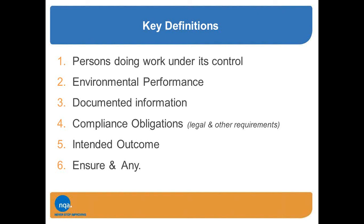Environmental performance refers to the environmental results achieved when aspects, activities, processes, products, services and systems are managed and controlled — that's what the standard is all about, improving your organisation's environmental performance. Documented information has replaced three terms used in the current standard: documentation, documents and records. They now come under one umbrella term. The standard uses 'retained documented information as evidence of' to mean records, and 'maintained documented information' without 'as evidence of' to mean items other than records. The phrase 'as evidence of' means it is not a requirement to meet legal evidence requirements such as waste transfer notes.